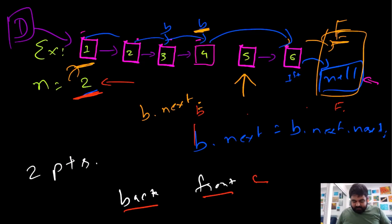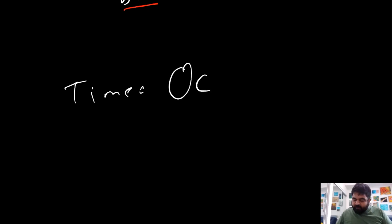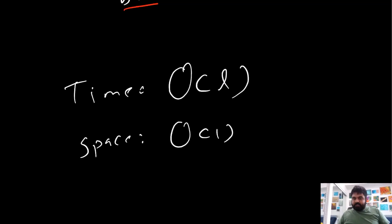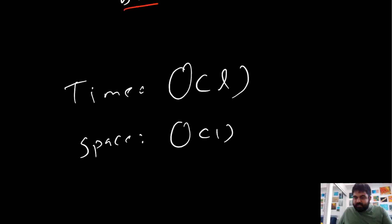For time complexity, it is O(L) where L is the length of the linked list. For space complexity, we are only storing a couple of pointers, so it is O(1) — constant space — and we are not using any additional space.